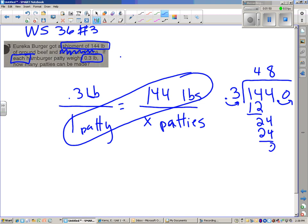And then there must be a number above every place. So the correct answer is she can make 480 patties with the 144 pound shipment.